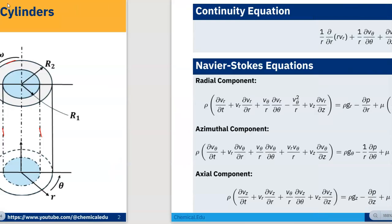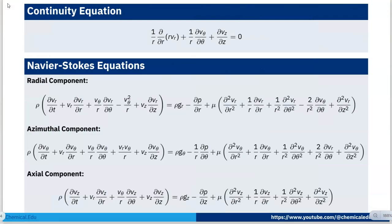First we write the governing equations: the continuity equation and Navier-Stokes equation. The continuity equation is: (1/r) ∂/∂r(r·v_r) + (1/r) ∂v_θ/∂θ + ∂v_z/∂z = 0.